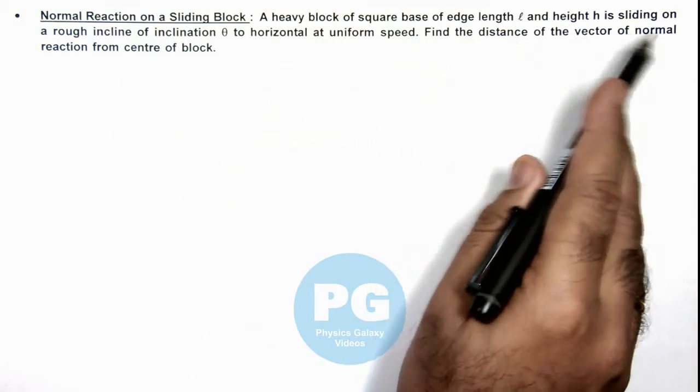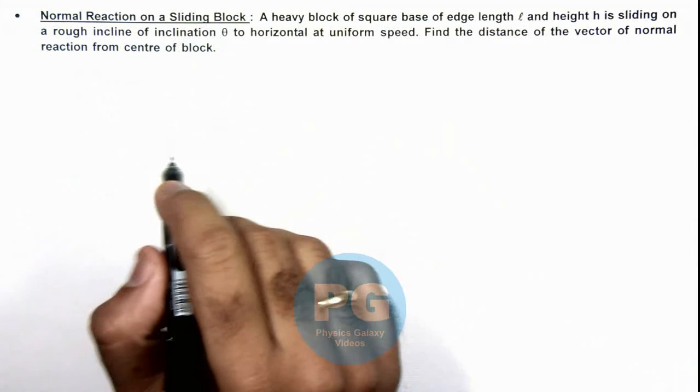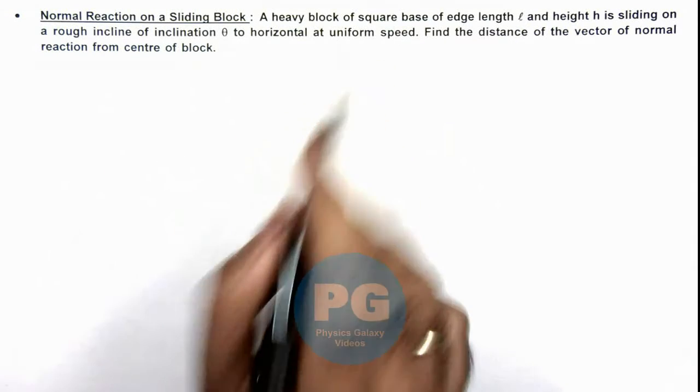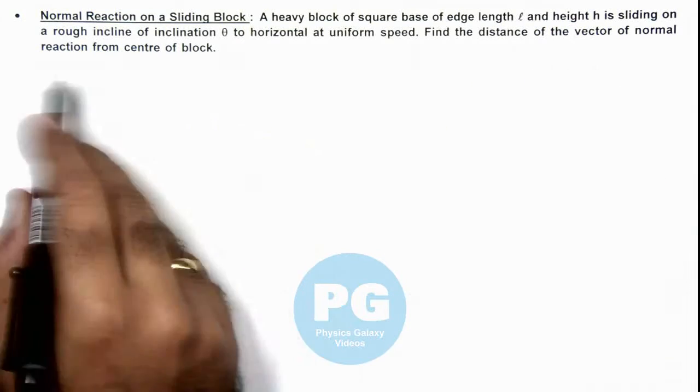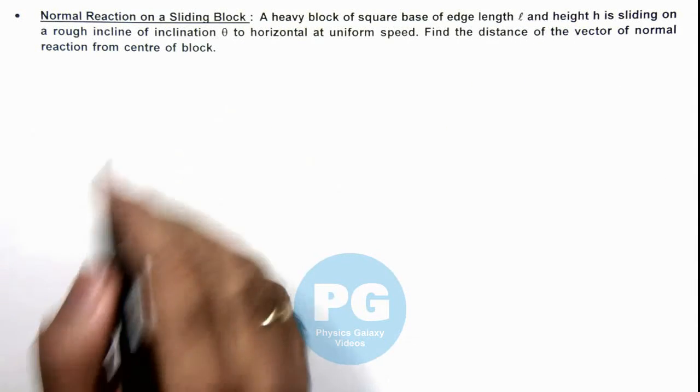And height h is sliding on a rough incline of inclination theta to horizontal at uniform speed. Here we are required to find the distance of the vector of normal reaction from center of the block.